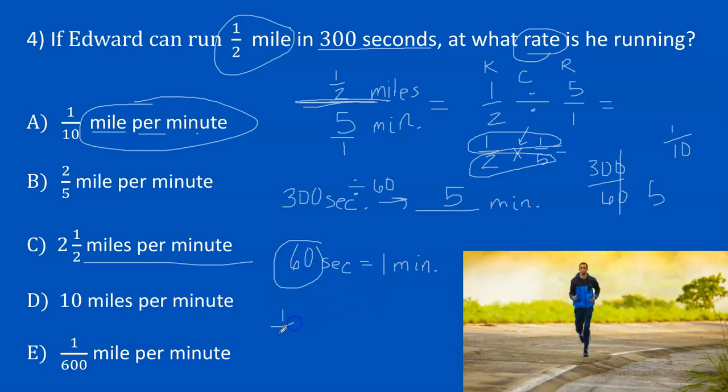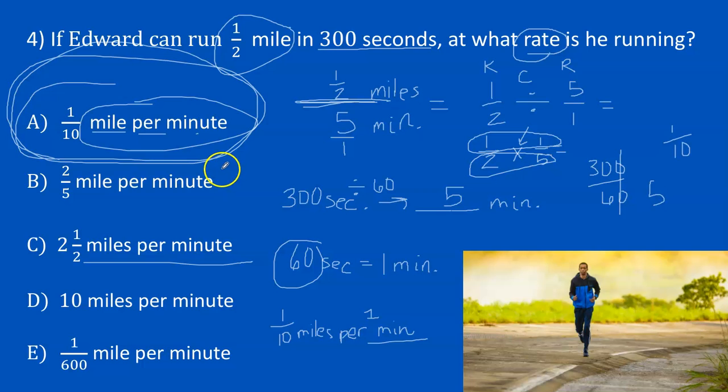Let me write it down here where I have room. 1/10, and that would be miles per 1 minute. Remember unit rate is expressing the second value as a 1. So 1/10 of a mile per minute. So that would be letter A is our answer. And when you're doing your work on GoFormative, remember you just have to circle your answer, and all of the work that I showed over here would have gone in my paper pencil notebook.